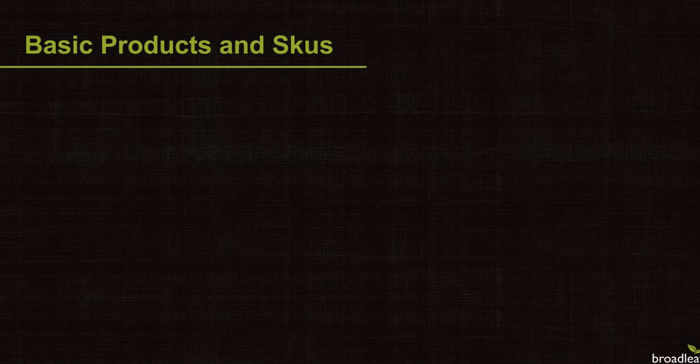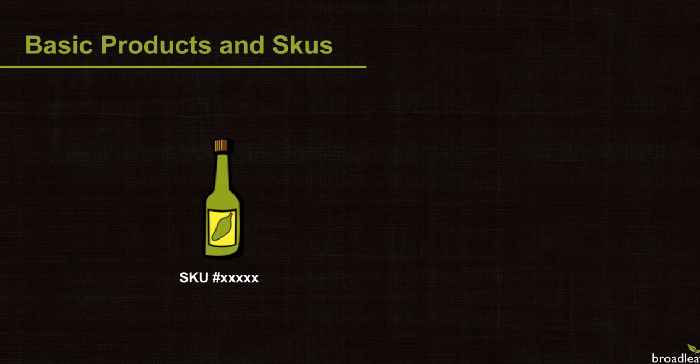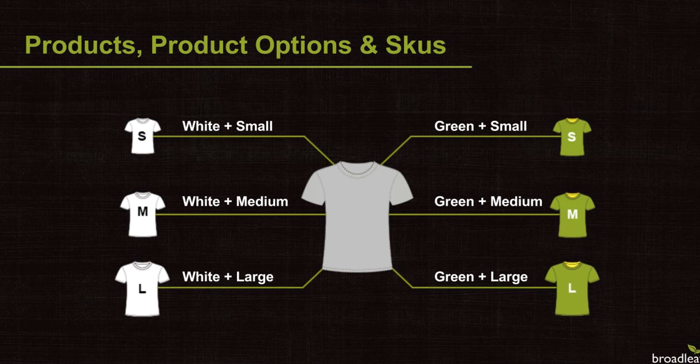Before we get started, let's take a minute to review some basic Broadleaf terminology. In Broadleaf, the key entities are products and SKUs. In the most basic case, a product has a single associated SKU. For example, a company may carry a particular hot sauce and have a stock of 100 bottles — the hot sauce product has a single SKU of quantity 100. In more complex cases, a product may have several SKUs, such as a set of t-shirts which vary in size and color. Broadleaf uses product options to capture these differences, generating the full scope of SKU variations, each available for purchase.